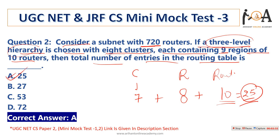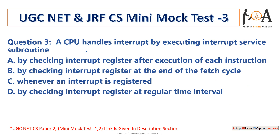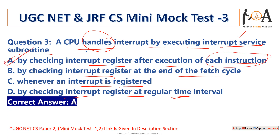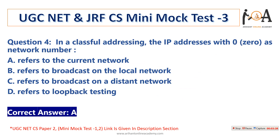The minimum entries in the routing table should be 25, so option A is the correct answer. The next question: a CPU handles interrupt by executing an interrupt service subroutine — by checking the interrupt register after execution of each instruction, at the end of a phase cycle, whenever an interrupt is registered, or at a regular time interval. After execution of each instruction, it checks whether the CPU is free, so option A is correct.